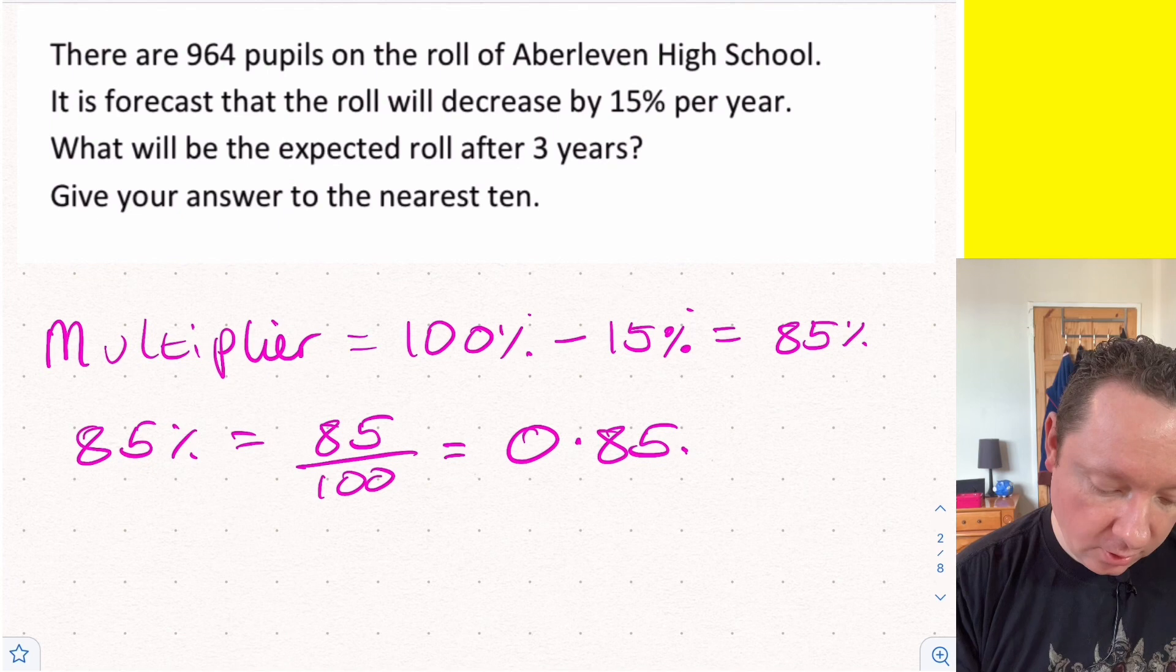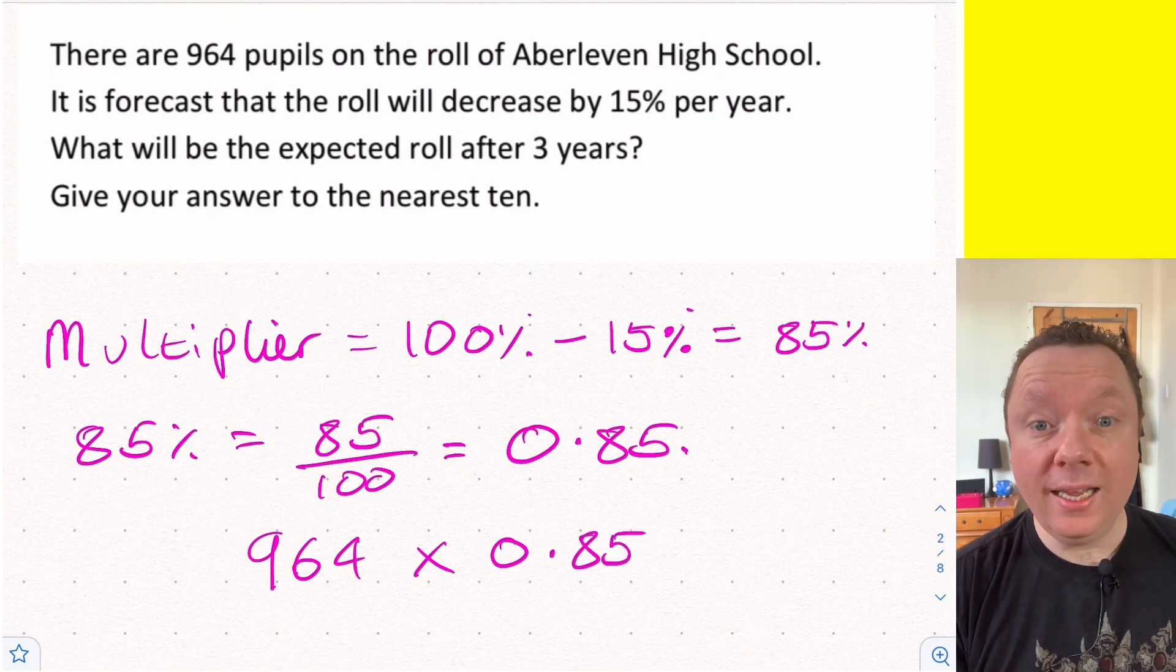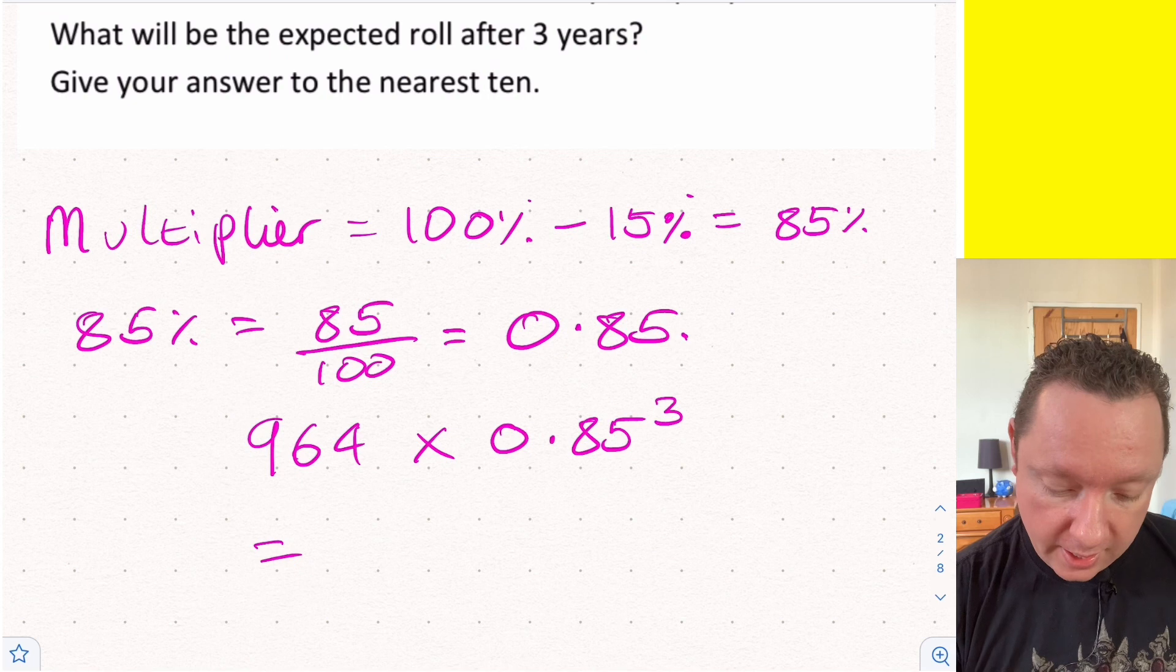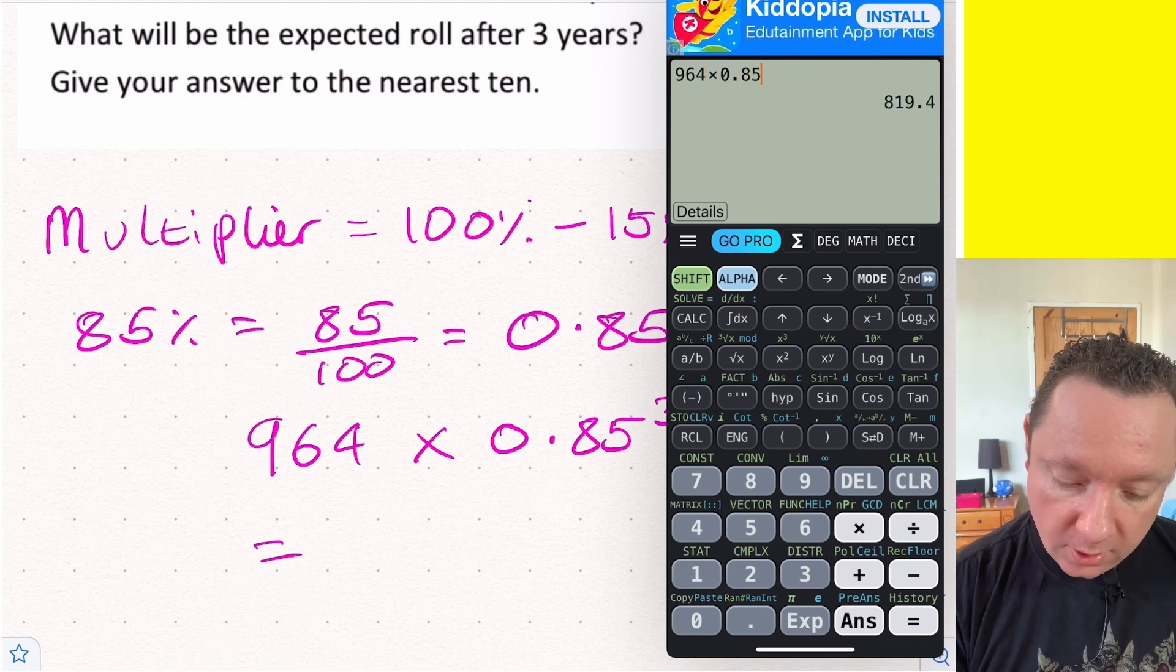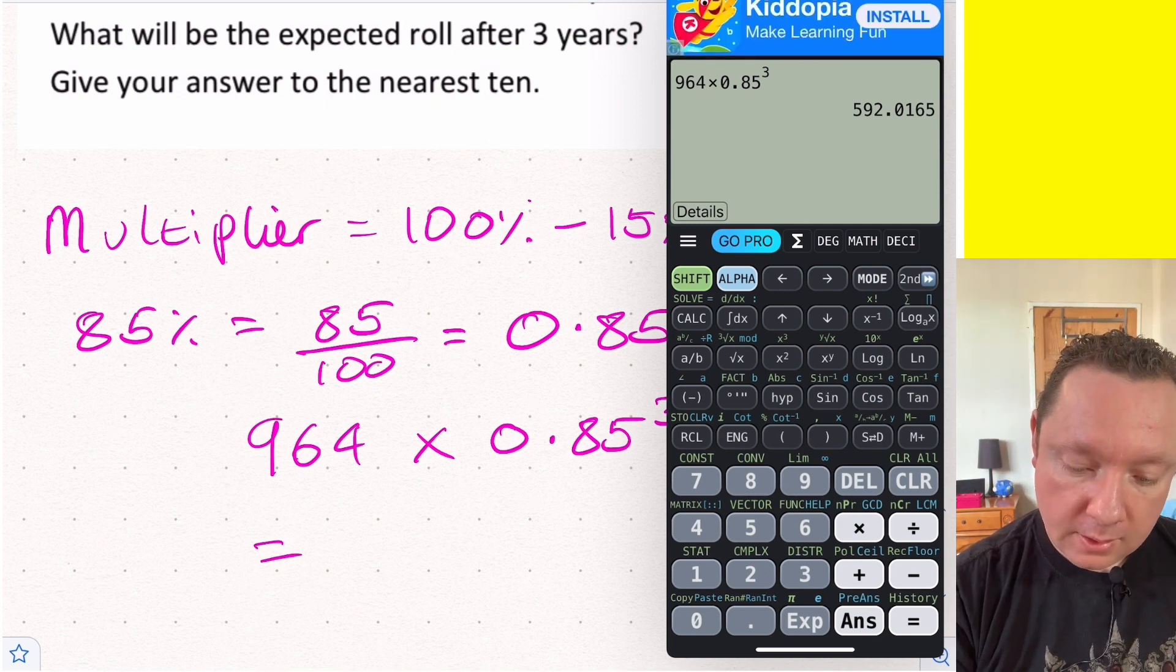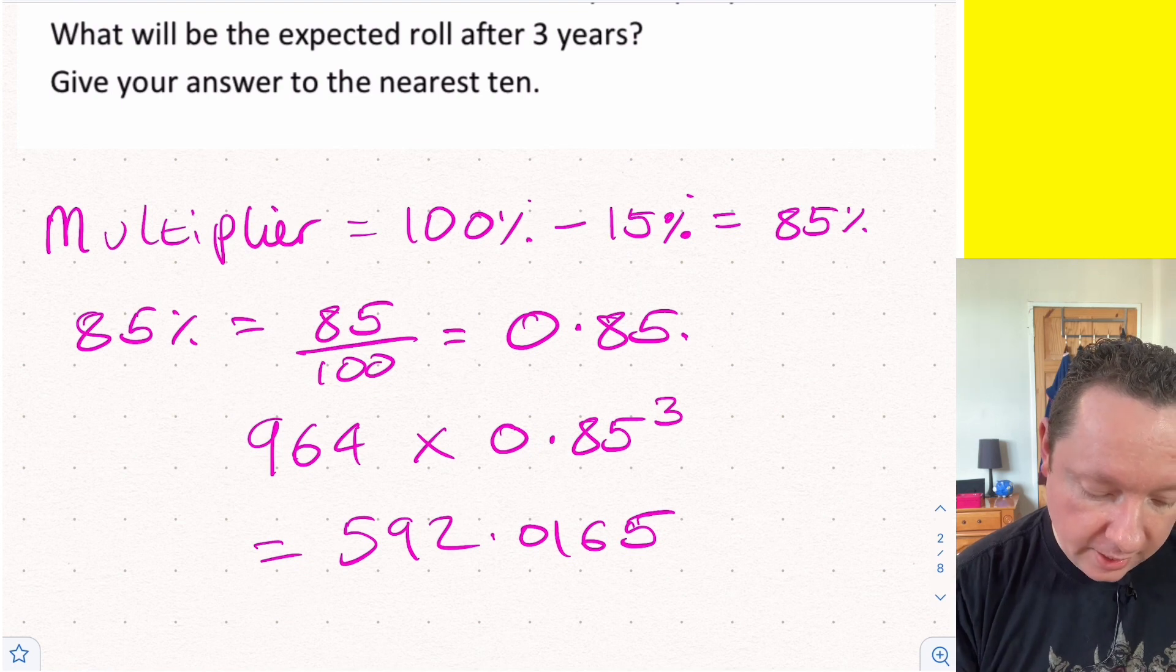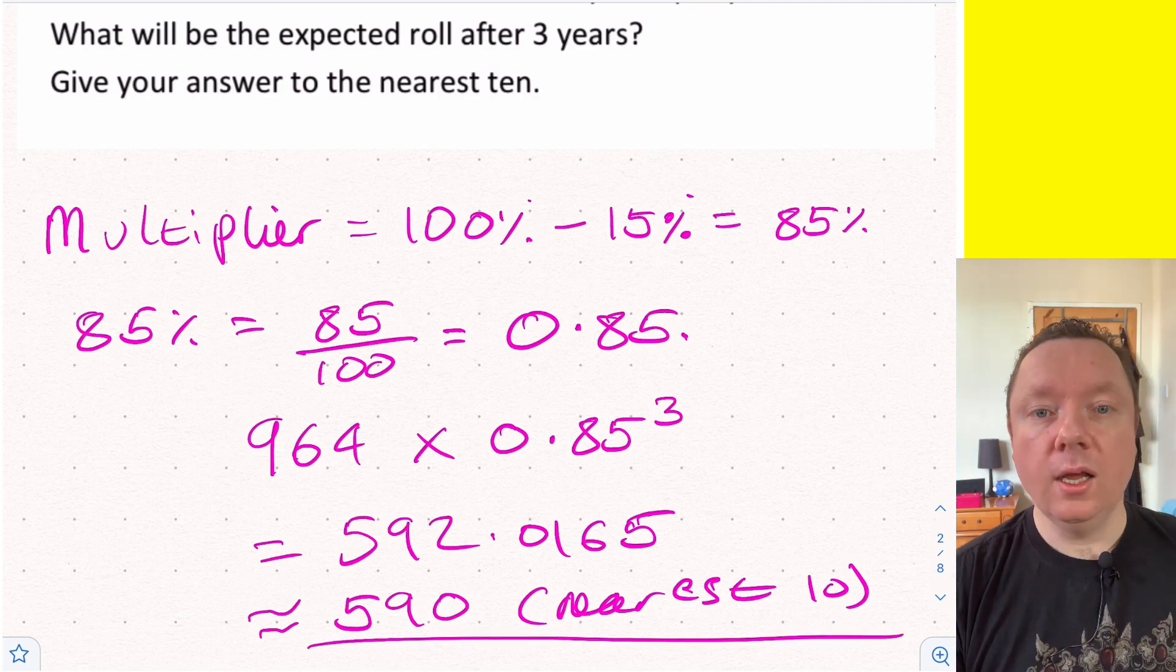Now the question is pretty simple. We take our number 964 and times by our multiplier to the power of the time, the number of years - 3. We cannot do that in our head, so let's grab a calculator and see what we get. We've got 964 times 0.85, you're looking for your power button on your calculator - xy - and 3. We get 592.0165, so that equals 590 to the nearest ten.